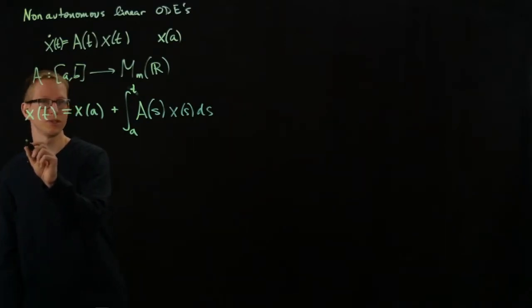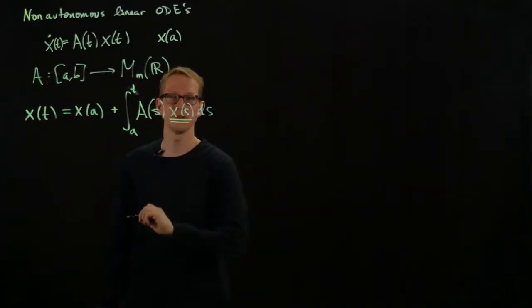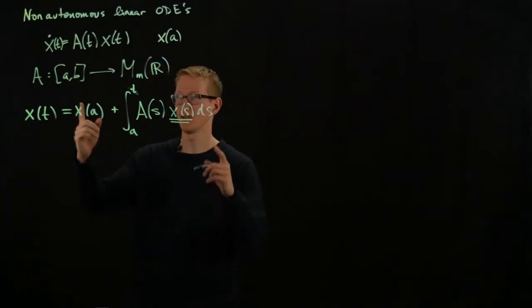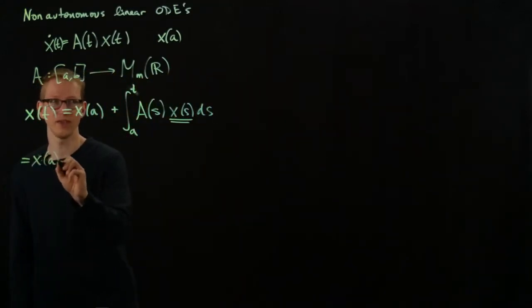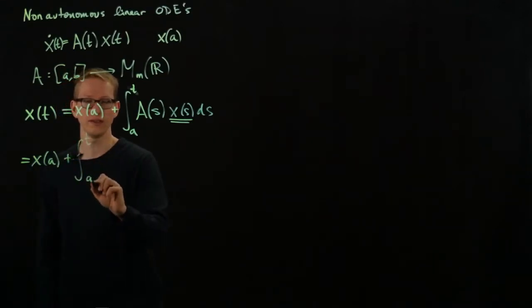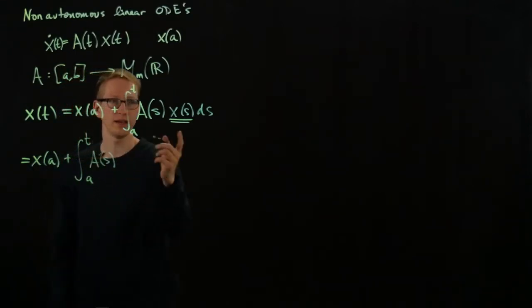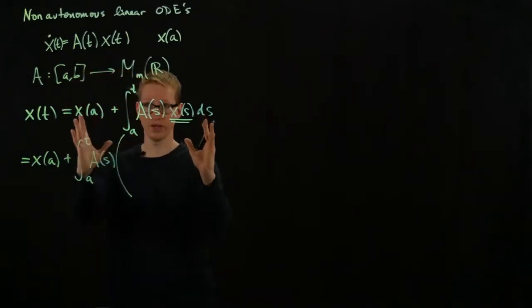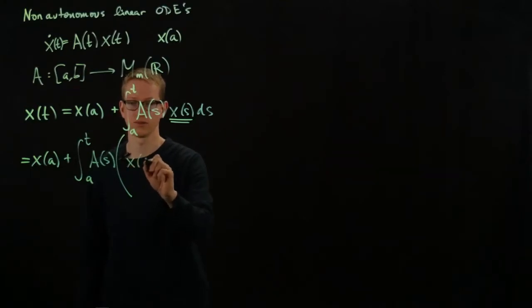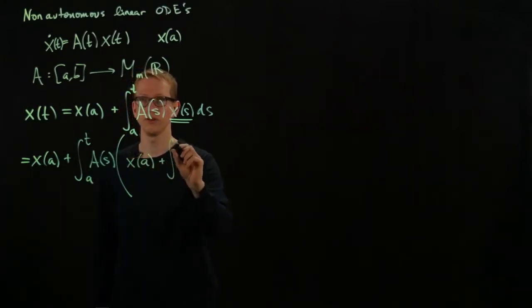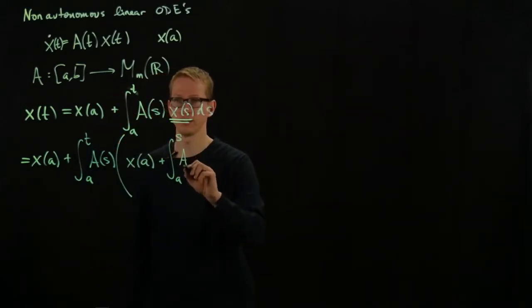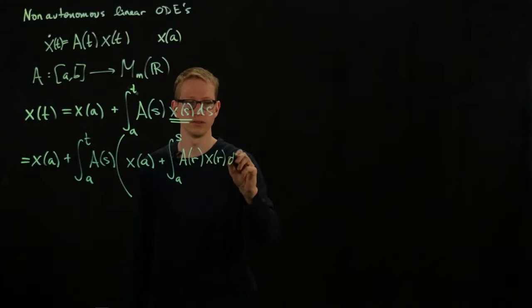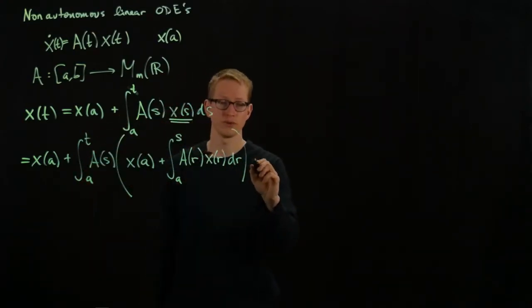So let me do something funny. And the funny thing that I'm going to do is I'm going to take x(s) and plug in this integral equation back into x(s). So this I can rewrite as x of a plus integral from a to t, a(s). And now let me write again this integral equation, but replacing x(t) with x(s). So it's x(a) plus integral up to s now from a. And now I need another dummy variable, so let me just call it r, let's say. So x(r) dr, close parentheses, and this, I'm integrating with respect to s.